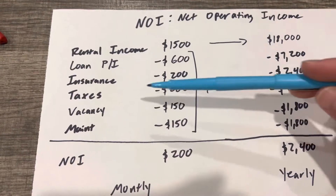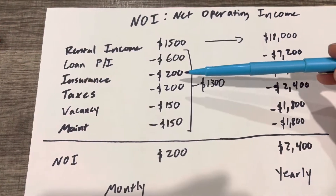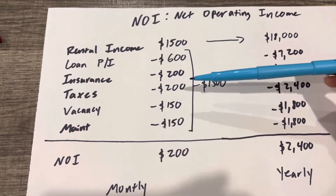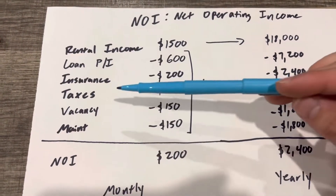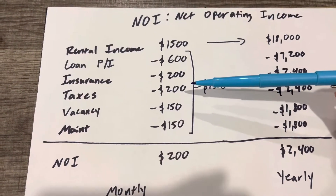Up next is our insurance — our property insurance — that's going to be $200 a month. Our taxes are going to be another $200 a month.